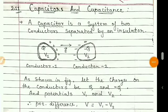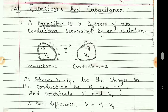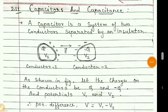Hello students. The name of our chapter is Electrostatic Potential and Capacitance. The first part of the chapter — electrostatic potential — is completed. Now we are going to start the second part, which is about capacitance.